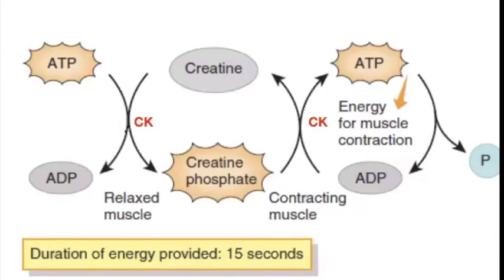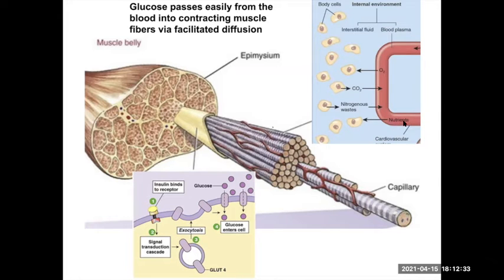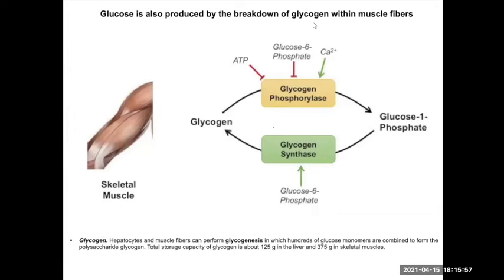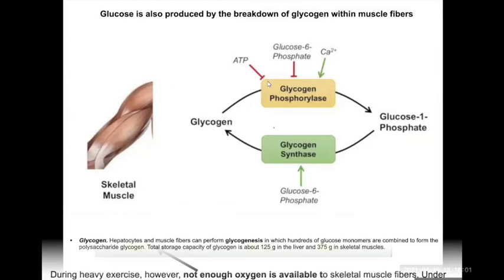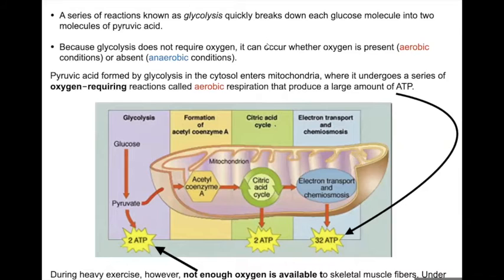In the last video we looked at how we use creatine phosphate as a source of ATP, but that's going to run out quick, so we have to bring in more glucose to break down. We're going to get that glucose from the blood where it'll enter the muscle cell, or we also have glycogen storage that we can use to break down to get glucose.